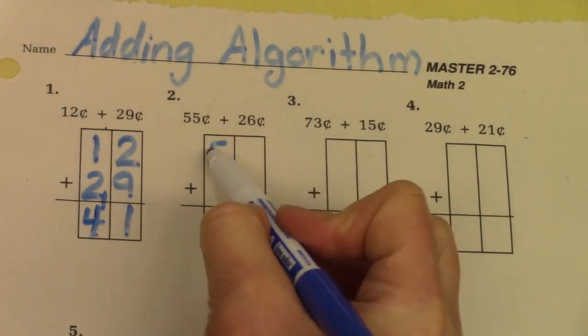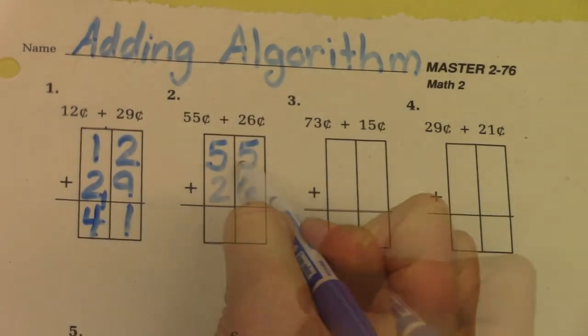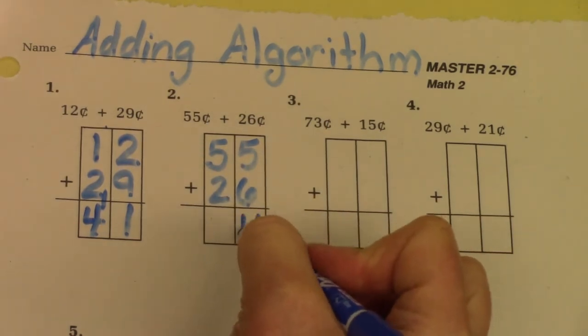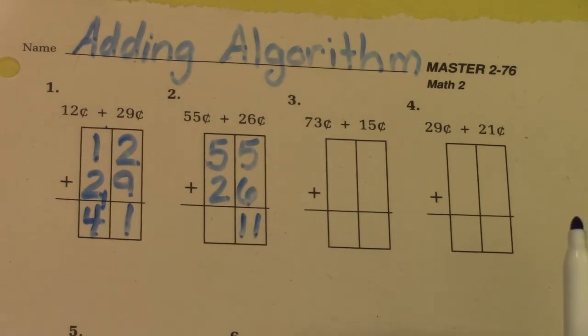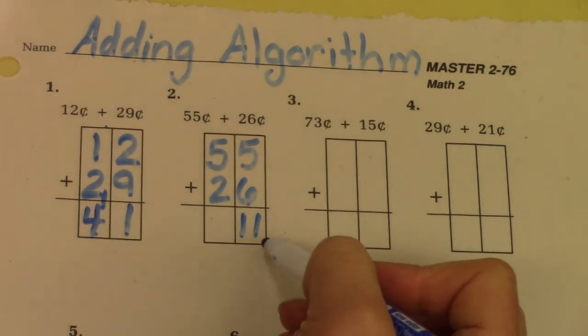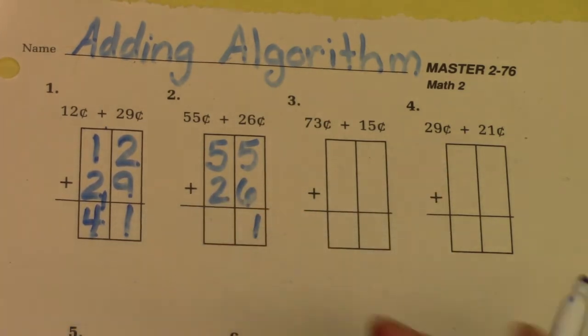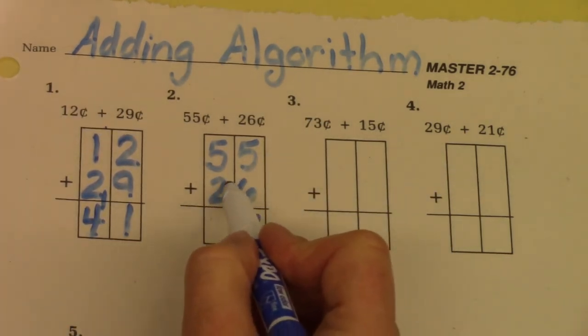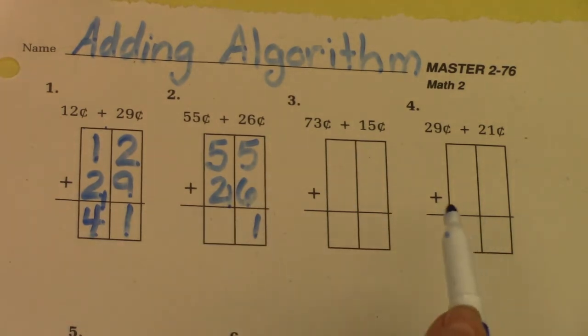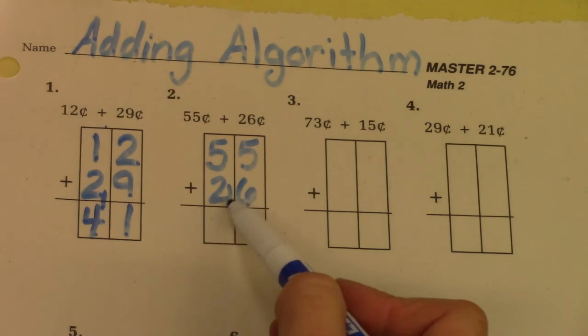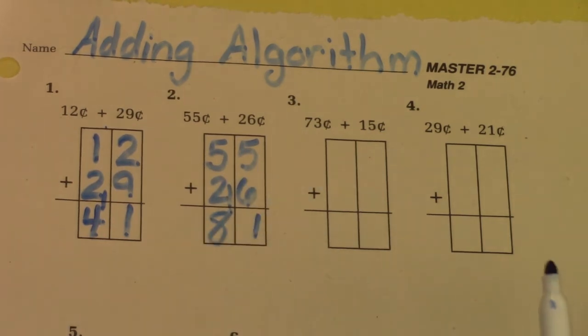I'm going to move over here and put 55 plus 26. 5 plus 6 is 11 but I can't put 11 in one column or in one place. So I'm going to take a group of 10 and I'm going to put it over here. 5 plus 2 is 7 plus 1 more is 8. I would like for you to complete the rest of this row.